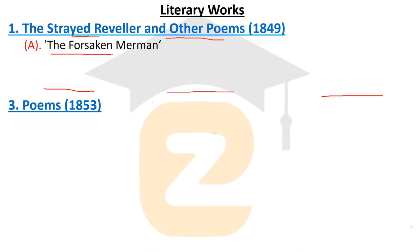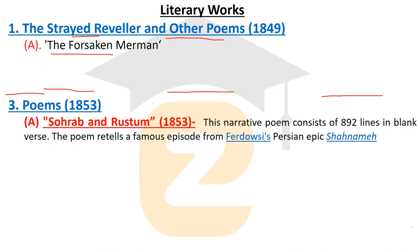Next is the Poems volume published in 1853 — a very important collection. An important poem included here is Sohrab and Rustam, also written in 1853. This narrative poem consists of 892 lines in blank verse. It is a narrative poem that tells a story.